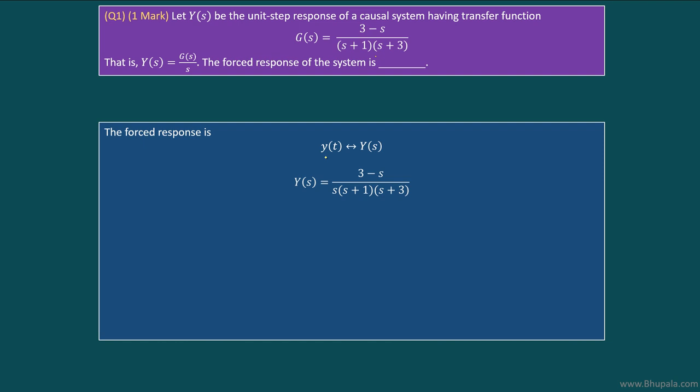Y(s) is G(s)/s which is given here. If you substitute G(s) in Y(s) we get Y(s) to be equal to this expression. By applying partial fraction expansion, we can easily see that Y(s) can be split into three terms.